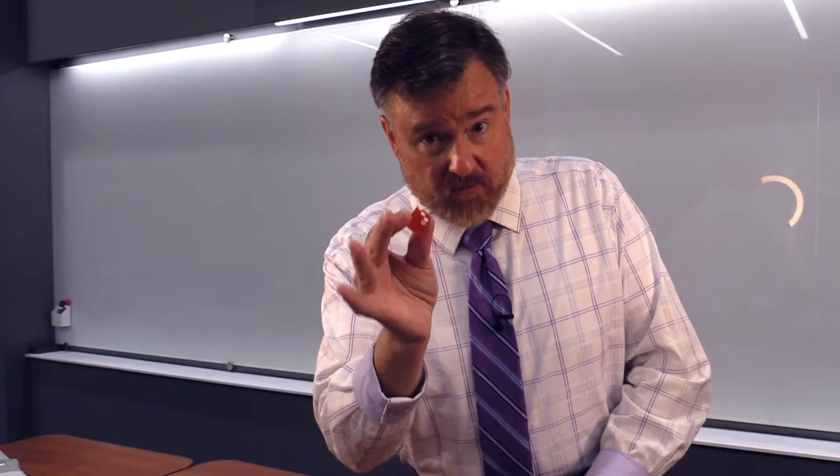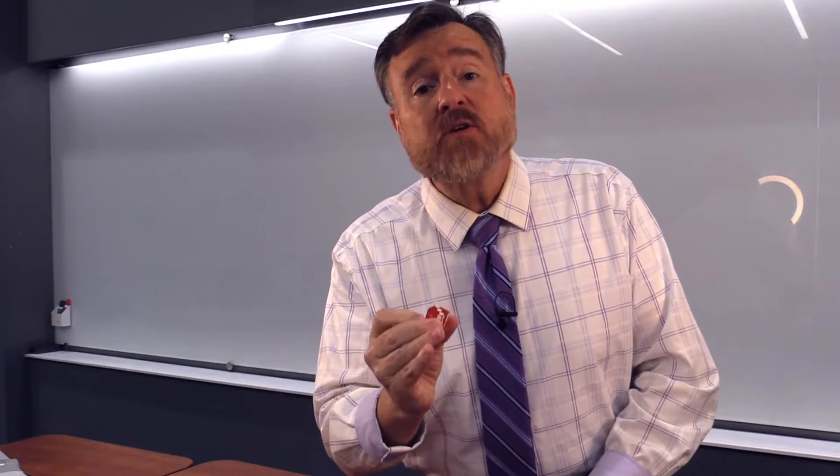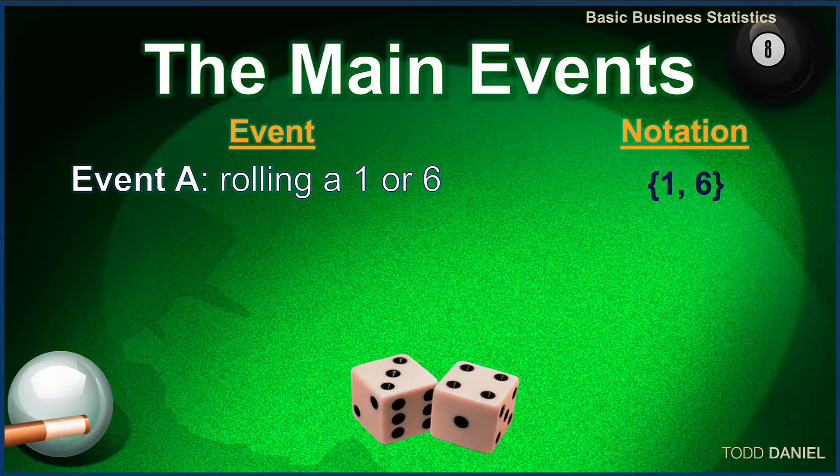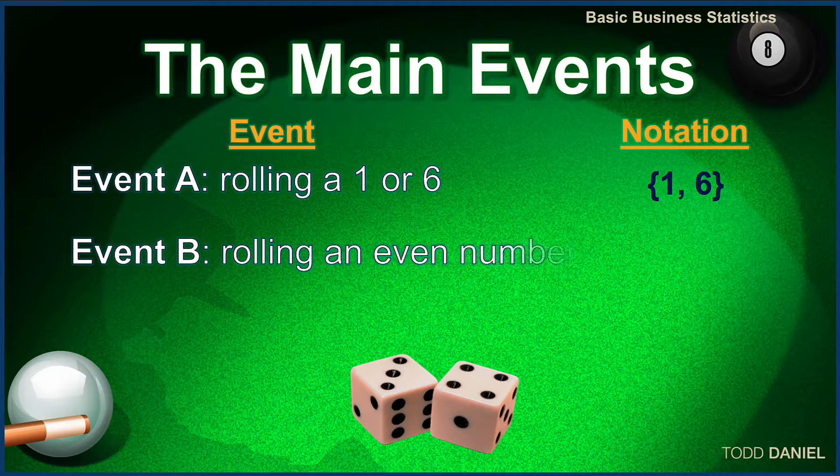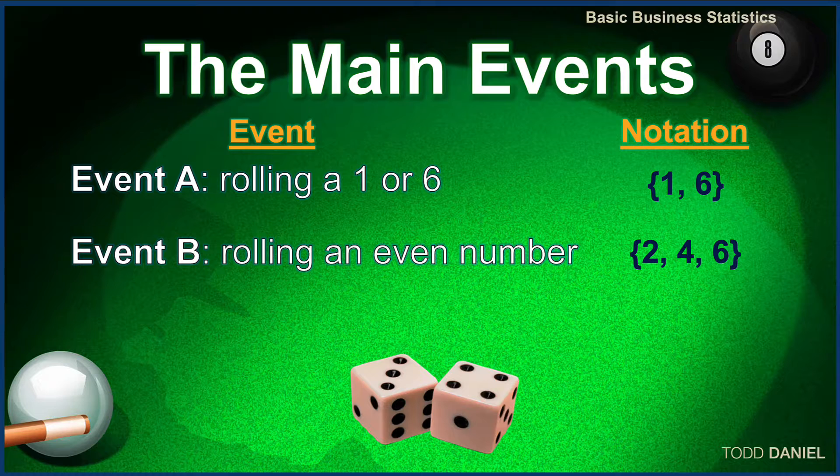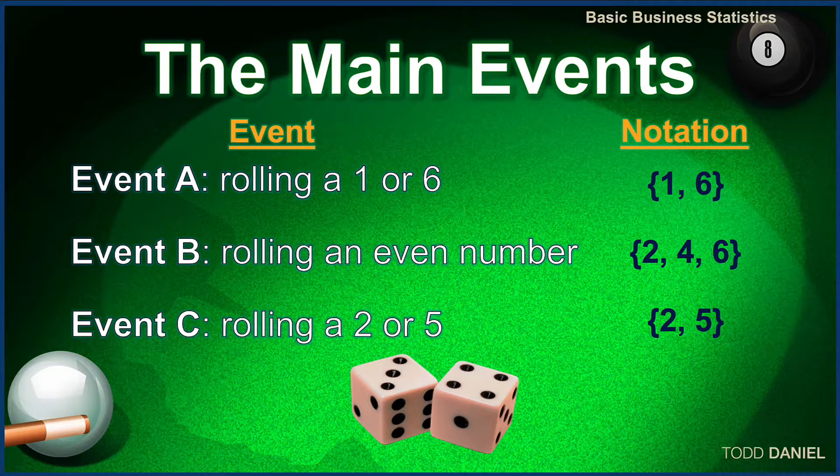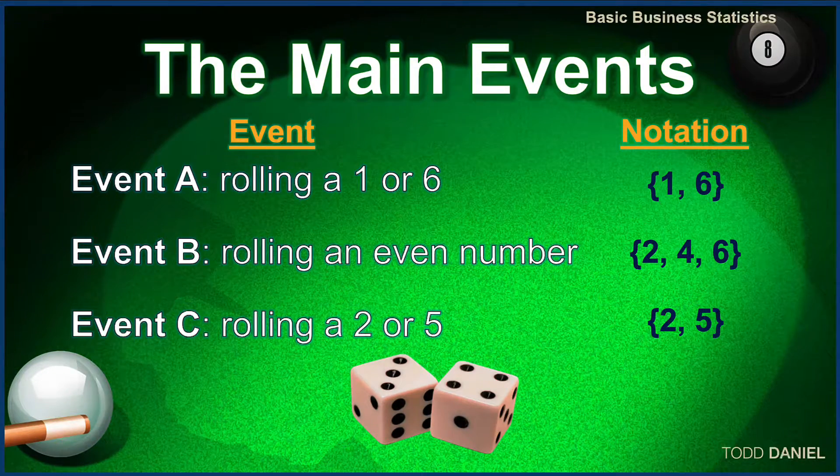And now, using the example of rolling a single die, let's look at how events can be notated. Event A is rolling either a 1 or a 6. The notation would be the 1 comma 6 in brackets. For event B, rolling an even number, the notation would be 2, 4, 6 inside of brackets. And for event C, rolling a 2 or a 5, the notation would be 2 comma 5, again, inside of brackets.